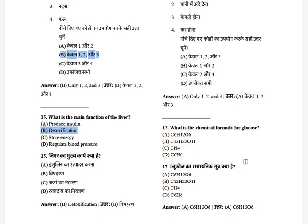What is the chemical formula for glucose? The options are: C6H12O6, C12H22O11, CH4, and C6H6. The answer is C6H12O6.